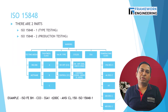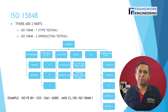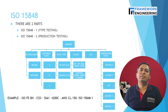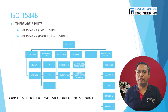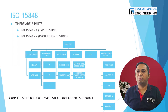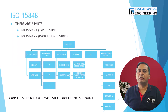Part 1 defines the requirements for fugitive emissions as shown in the table. Testing media can be either helium or methane. There are three tightness classes defined: A, B, and C. Class A refers to a leakage rate of 10 raised to minus 6 milligram per second per meter. Class B refers to leakage between 10 raised to minus 6 and 10 raised to minus 4. Class C refers to leakage between 10 raised to minus 4 and 10 raised to minus 2.